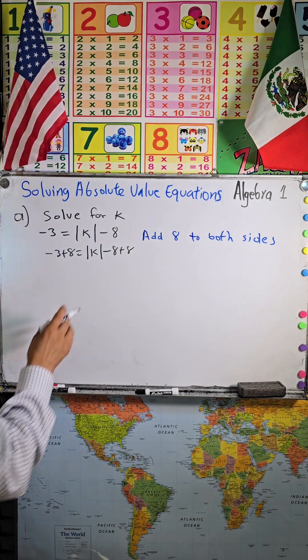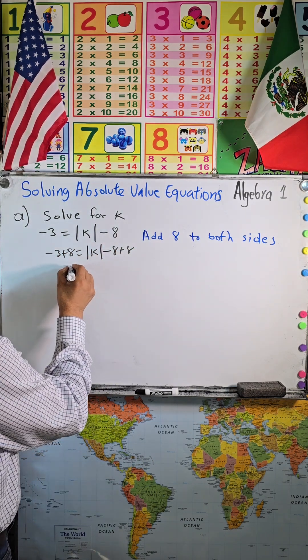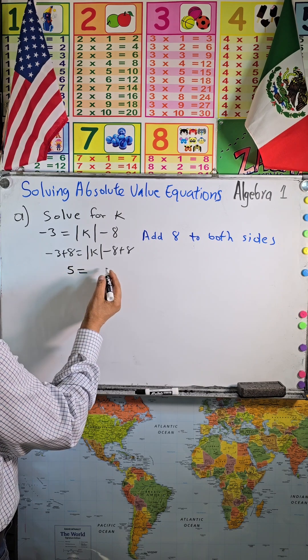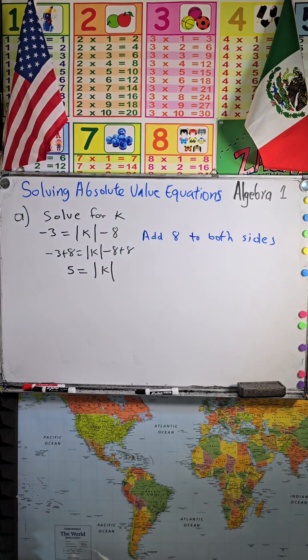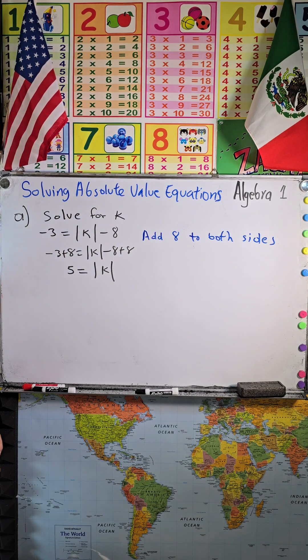When we subtract this, we will have 5 equals absolute value of k.